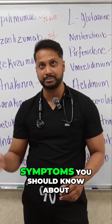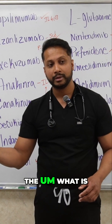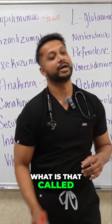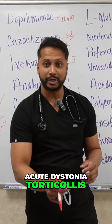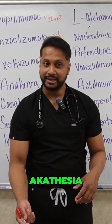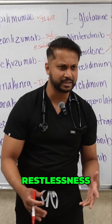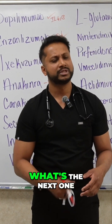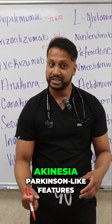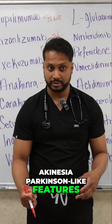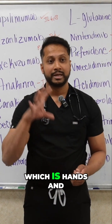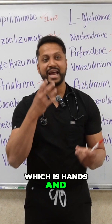What are the extrapyramidal symptoms you should know about? What is the first one that'll happen? Your neck is going to get caught up — that's called acute dystonia, torticollis. And then what do you get? Akathisia — mostly restlessness. And then what else? Akinesia, Parkinson-like features. And lastly, tardive dyskinesia, which involves lip smacking and hand movements.